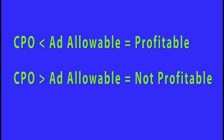Media that generates a CPO greater than your ad allowable is not profitable, and you probably don't want to purchase more of it. Another metric that will allow you to draw the same conclusions as comparing the ad allowable to the CPO is the media efficiency ratio, or MER.